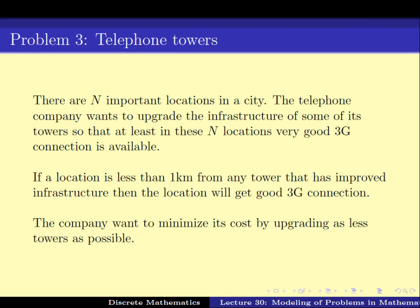Problem 3 is the telephone tower problem. You have N important locations in the city and you want to ensure that every location has good 3G connection. For a good 3G connection, there must be at least one tower within a radius of one kilometer that has the 3G option. The company has to decide how to minimize the number of towers it wants to upgrade so that every location in the city gets the 3G option, and we will use our various modeling techniques to solve this problem.